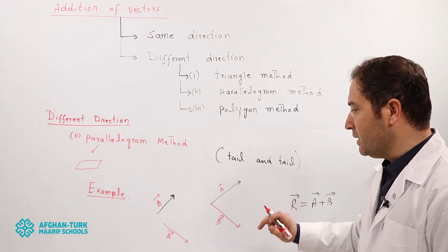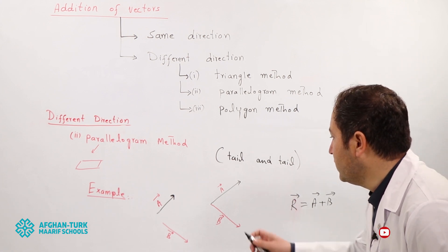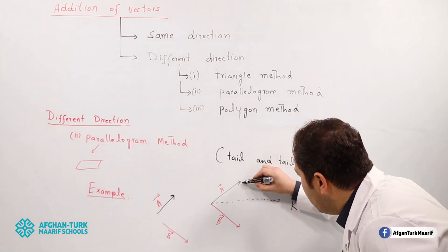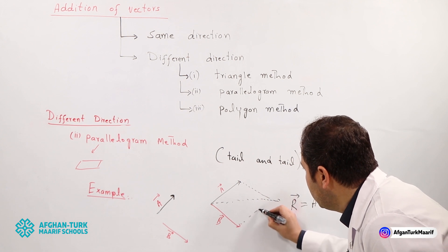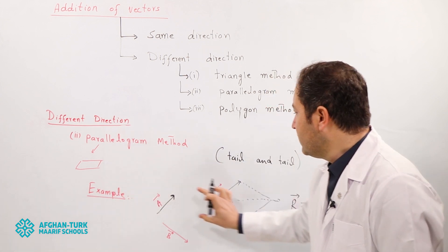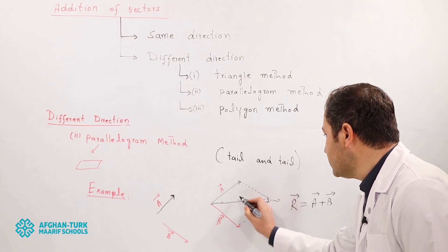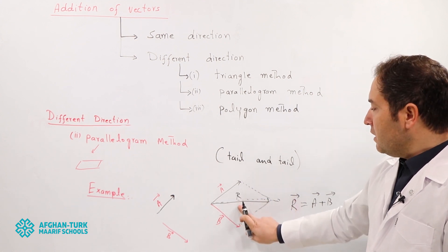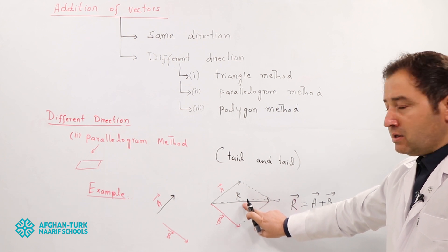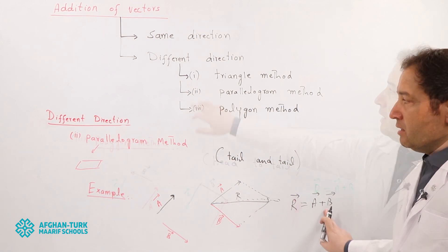The resultant vector is drawn from the tail of these two vectors. After this, we join the remaining parts to complete the shape, which looks like a parallelogram — that is why this method is called the parallelogram method. The middle vector is the resultant vector, representing the addition of vector A plus vector B.